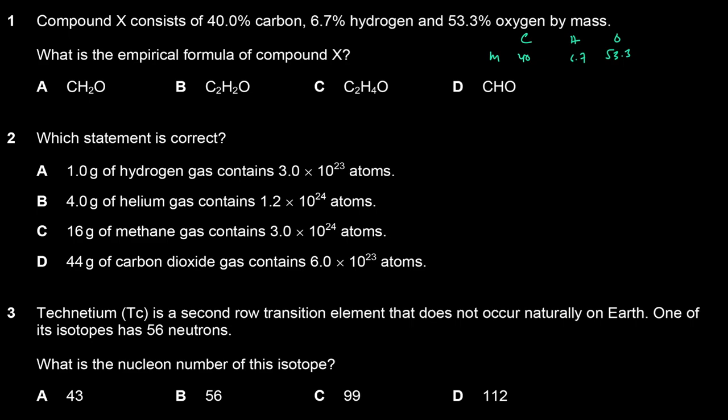For the empirical formula, we want the atomic ratio or the molar ratio. So we're going to divide the masses by the relative atomic masses. For carbon, that would be 40 divided by 12, which is 3.33. This is M over AR, giving us the number of moles. For hydrogen, that's 6.7 divided by 1, so 6.7. And for oxygen, it's 53.3 divided by 16, which comes out to 3.33.